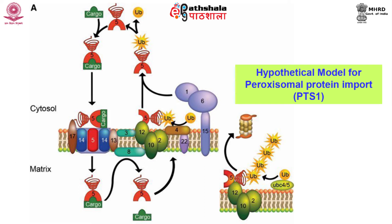Here is the hypothetical model for PTS1 protein import. First, cytosolic pex 5 binds a newly synthesized PTS1-containing cargo protein. The PTS1 binds to the C-terminal TPR domain of pex 5. Then pex 5 docks to the receptor docking complex at the peroxisomal membrane. Subsequently, the pex 5-cargo complex is imported into the organelle matrix, plausibly by formation of a transient pore by pex 5 in the peroxisomal membrane. The pex 5-cargo complex then dissociates and pex 5 is recycled back to the cytosol, enabling pex 5 to bind the next PTS1 cargo protein. Recycling involves mono-ubiquitination of pex 5.